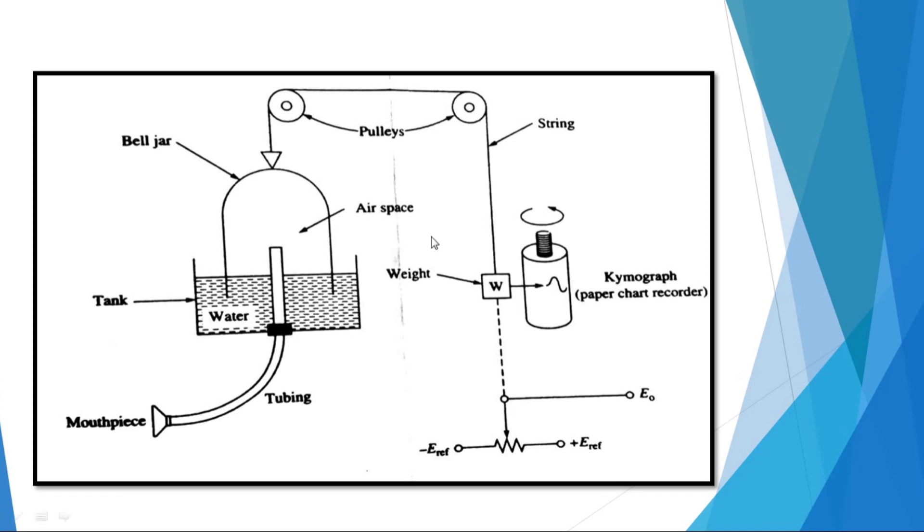The chart recorder is a rotatory drum model called a kymograph. It rotates slowly at speed between 30 and 2000 mm per minute.